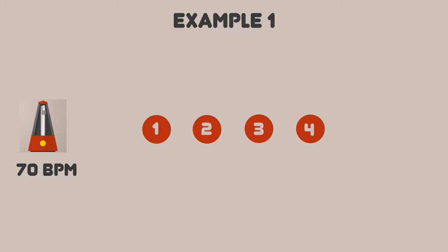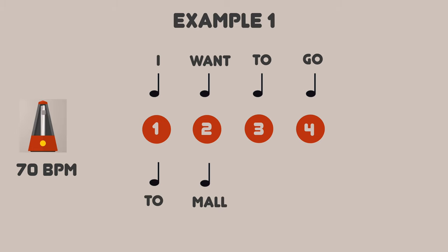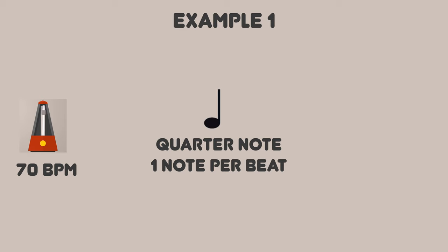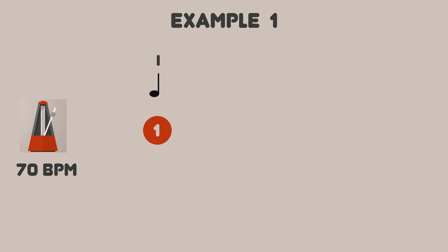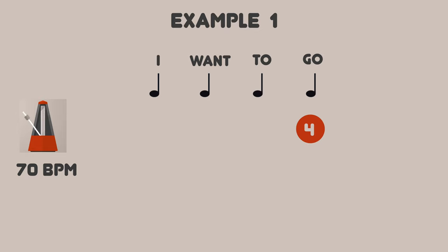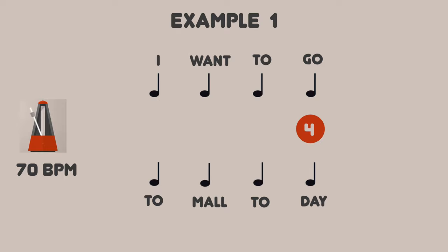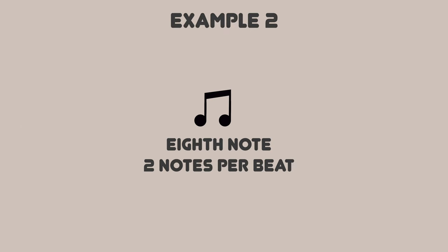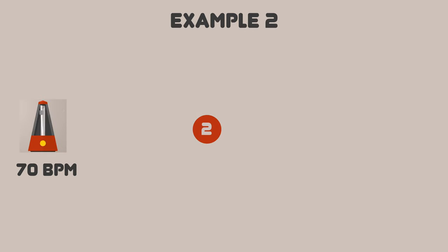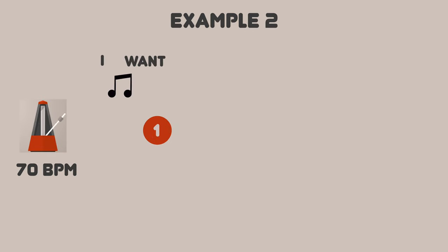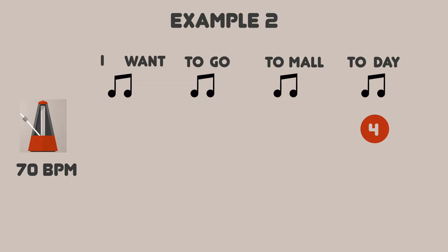For example, let's create a new song. Fix the BPM at 70. The lyric phrase is 'I want to go to mall today.' The music symbol used here is a quarter note — one beat per note. There are eight notes in the phrase, so it is played one note per beat: 'I want to go to mall today.'